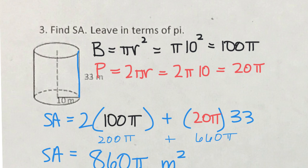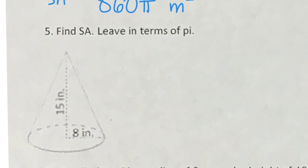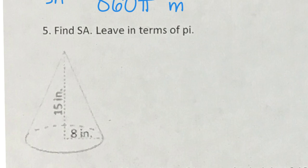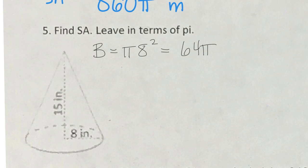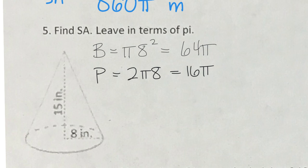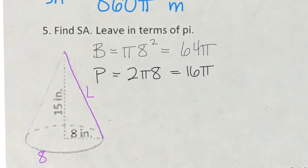For a cone (number 5), calculate the base area: pi times 8 squared is 64 pi. The perimeter of the circle is 2 pi r, so 2 pi times 8 is 16 pi. The slant height is the diagonal from vertex to base. Since we don't know it, use the Pythagorean theorem: 8 squared plus 15 squared equals L squared, giving a slant height of 17.